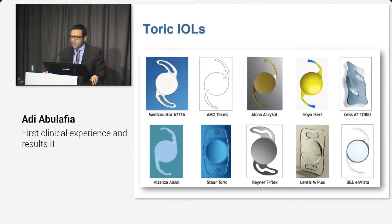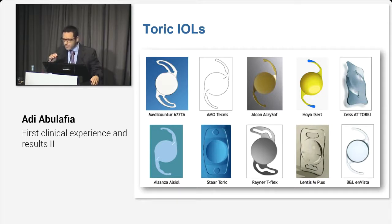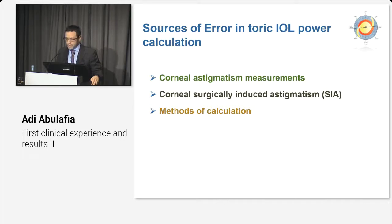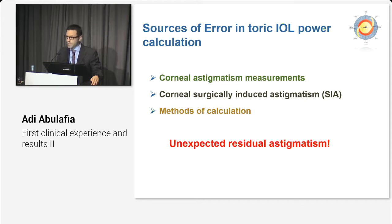Good afternoon to you all. Toric IOLs are becoming the standard of care for patients with pre-existing corneal astigmatism who undergo cataract surgery. However, the results following their implantation are not always predictable. Corneal astigmatism measurements, surgically induced astigmatism, and the methods of calculations are all factors that might contribute to unexpected residual astigmatism.